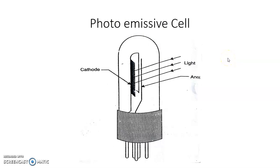Photoemissive cells are also known as photo tubes. They are based on the emission of electrons from a metal cathode when exposed to light radiations. The cell consists of two metal electrodes — a cathode and an anode — fixed in an evacuated glass tube fitted with a base, similar to a thermionic valve. The cathode plate is either semi-cylindrical or V-shaped and is made of metal coated with an emissive material.